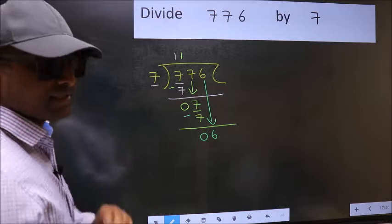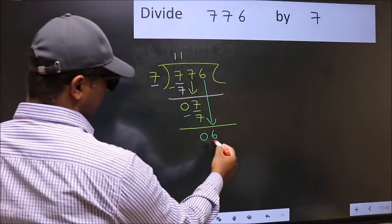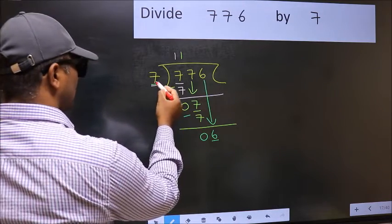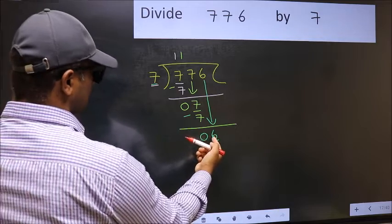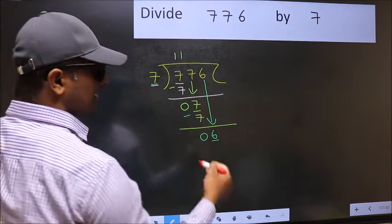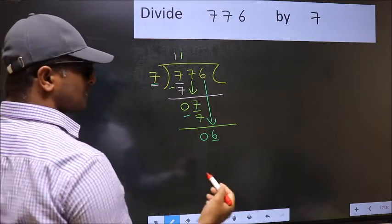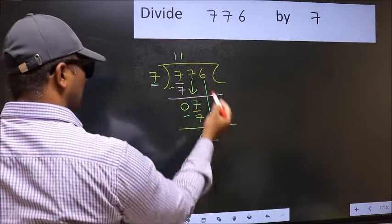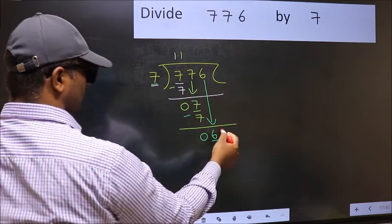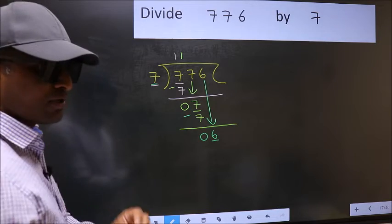And the mistake is this. Here we have 6 and here 7. 6 is smaller than 7. So what many do is they directly put dot and take 0. Which is wrong.